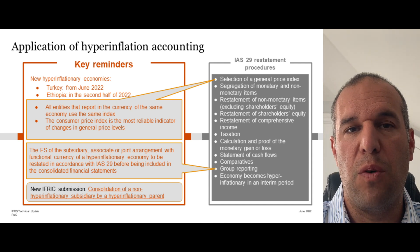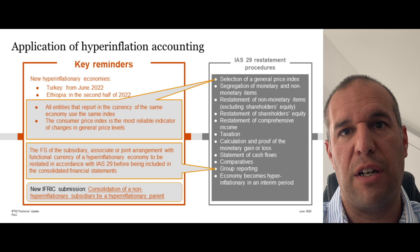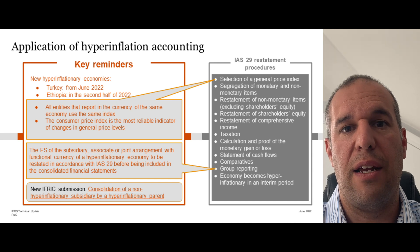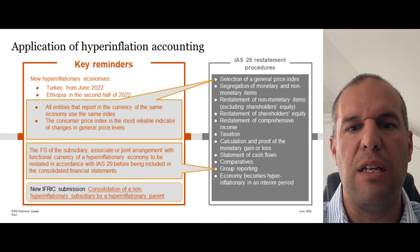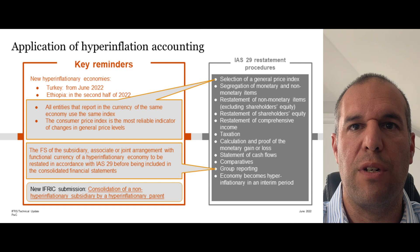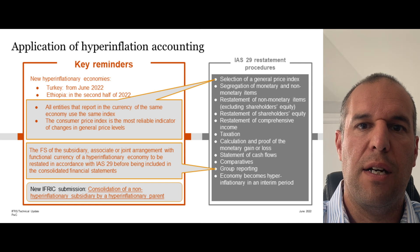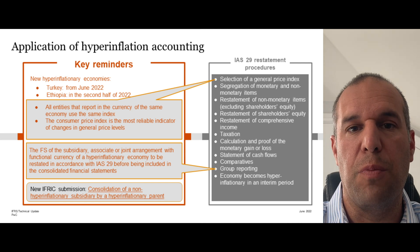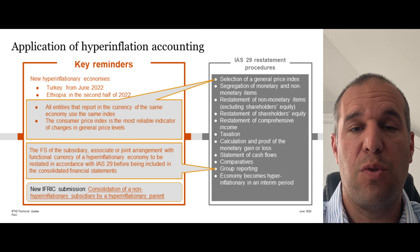The IFRS Interpretations Committee recently received a submission on how a parent with a hyperinflationary functional and presentation currency should consolidate and present a subsidiary that has a non-hyperinflationary functional currency — for example, a parent in Turkey with an EU operation. The committee is currently analyzing that fact pattern. We have guidance on that on Viewpoint in our manual of accounting and believe that the policy choice is acceptable, but we'll keep you updated. More guidance on the application of IAS 29 is available on Viewpoint and included in our PwC manual of accounting.